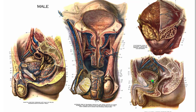This constriction is going to be the internal urethral sphincter, and then the skeletal muscle on the other side of the prostate gland forms the constriction of the external urethral sphincter. This tiny little section of the urethra is the membranous urethra, and then as it runs through the corpus spongiosum of the penis it's either the spongy urethra or the penile urethra, with the external urethral opening at the very end.